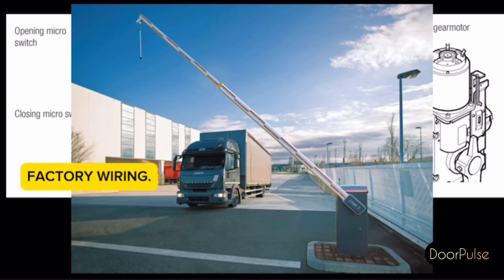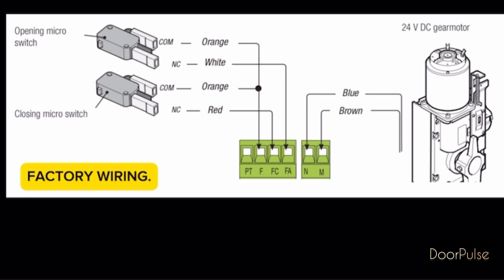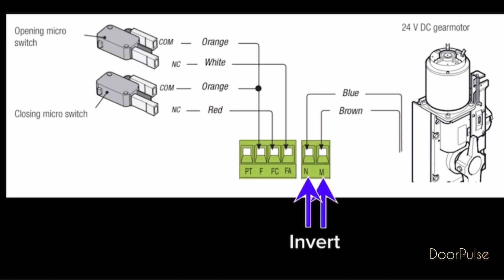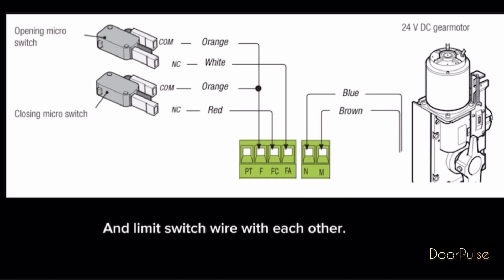The gear motor is already connected for left side, but if you want to install the barrier on the right side, then invert this motor two wires with each other, and limit switch wire with each other.